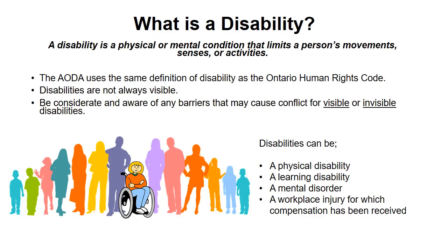What is a disability? A disability is a physical or mental condition that limits a person's movement, senses, or activities. The AODA uses the same definition of disability as the Ontario Human Rights Code. Disabilities are not always visible — be considerate and aware of any barriers that may cause conflict for visible or invisible disabilities.